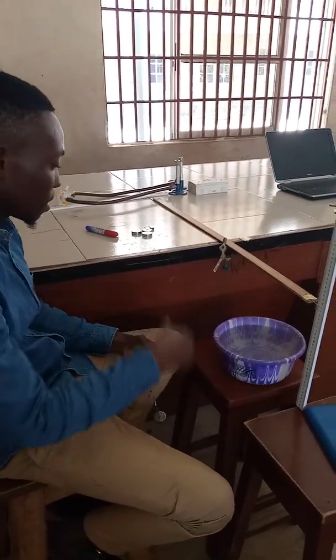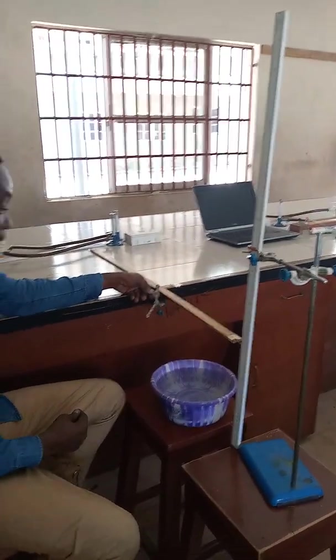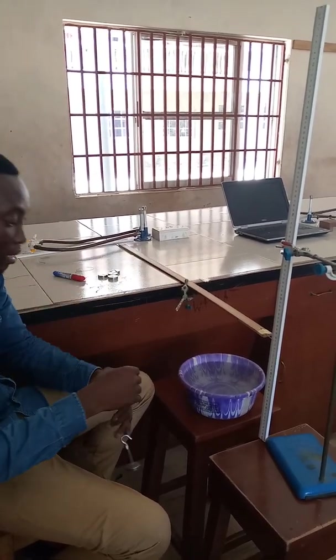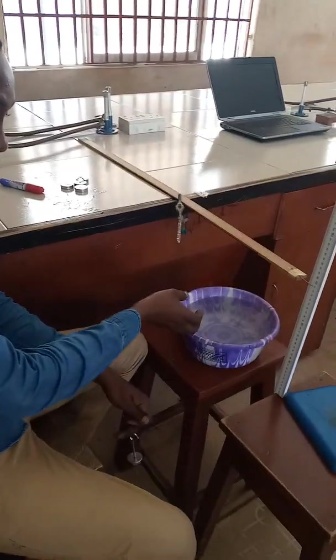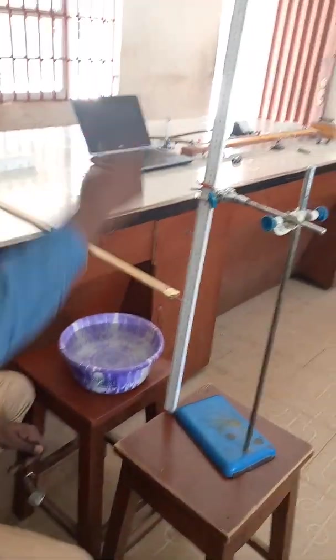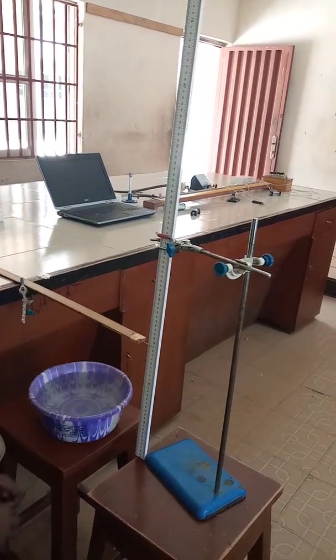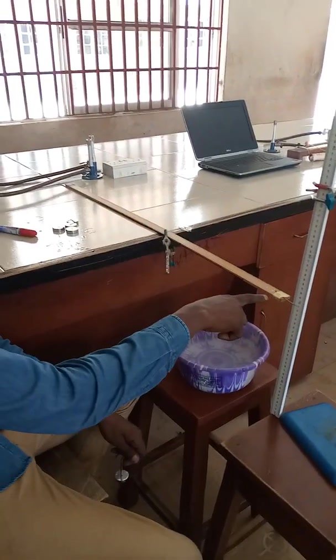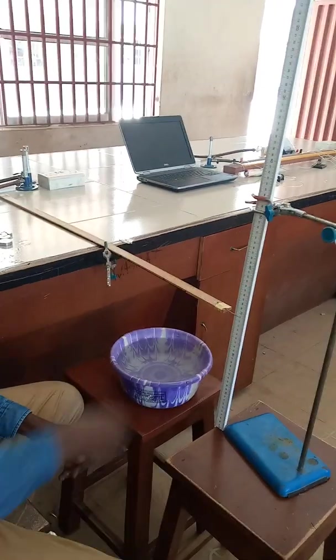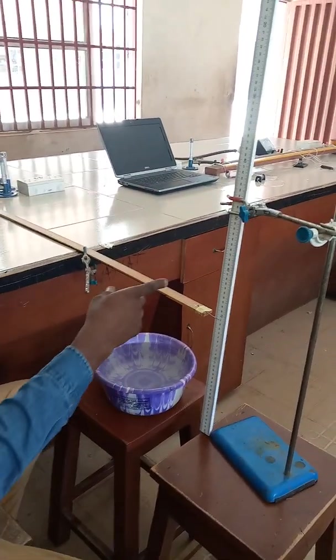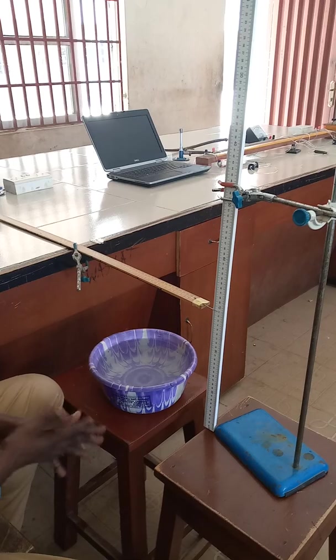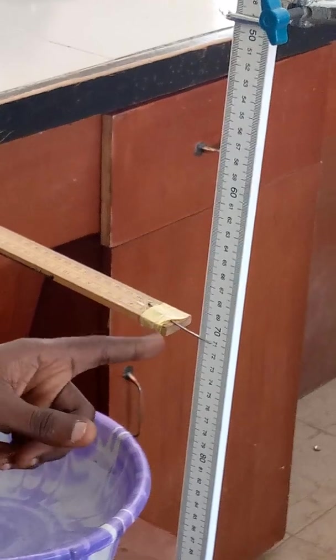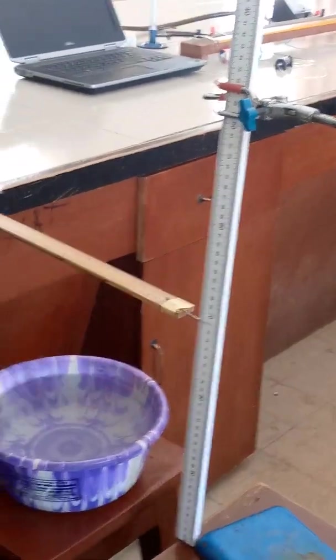This is the experimental setup. As you can see, I'm using a clamp in form of my G-clamp. I don't have a G-clamp, so that's why I'm using this. And this is my water, my rubber filled with water. This is my second meter rule, held firmly on a retort stand. So we are going to first of all take the value of X0, which is the distance at which the pointer makes at the meter rule. From what I'm showing here, the pointer is at 71 cm mark. So our X0 is going to be 71.